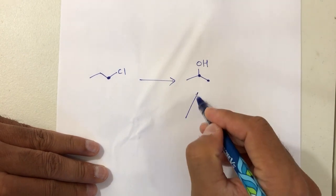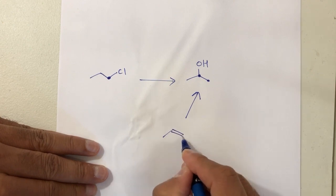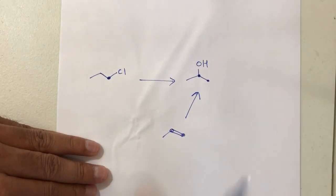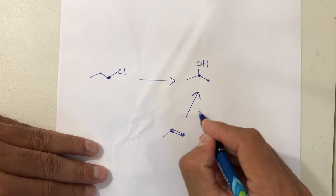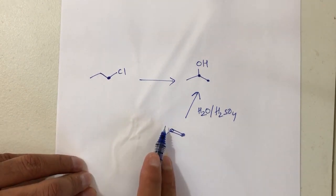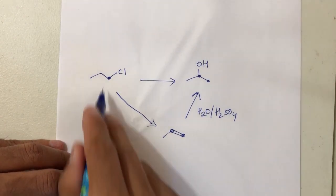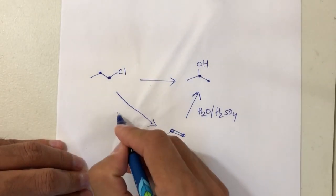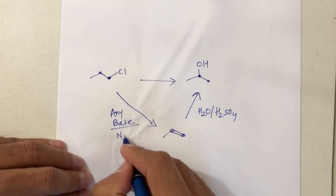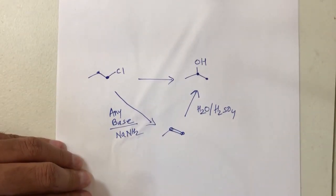Can I go a step back and find something close? If I have a double bond, then I can place an OH via hydration — H and OH. So if I use H2O and H2SO4, hydration will put H here and OH here. Now the question is, can I go from starting material to the double bond? Yes, because I have an alpha carbon with a leaving group and a beta carbon with a hydrogen. You can throw any base since there's only one beta here — for example, NaNH2.